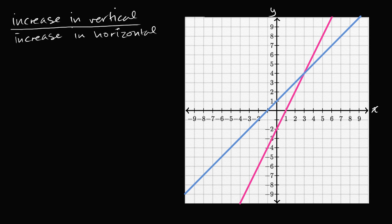Let's look at that magenta line again. Let's start at an arbitrary point — one where it's easy to identify our location. If I increase in the horizontal direction by one, moving one to the right, to get back on the line, how much do I have to increase in the vertical direction? I have to increase by two. So for this magenta line, the increase in vertical is two for every increase of one in the horizontal direction.